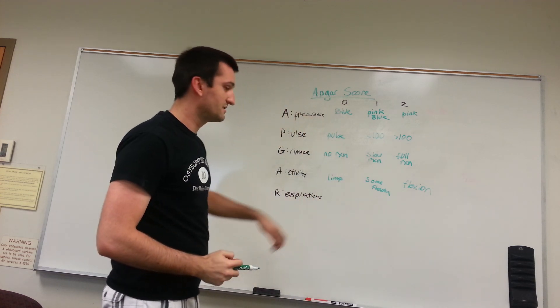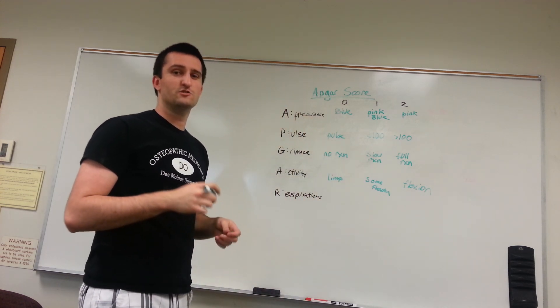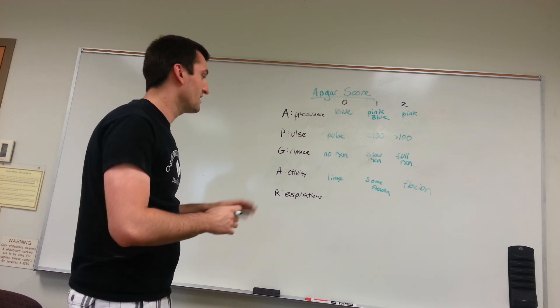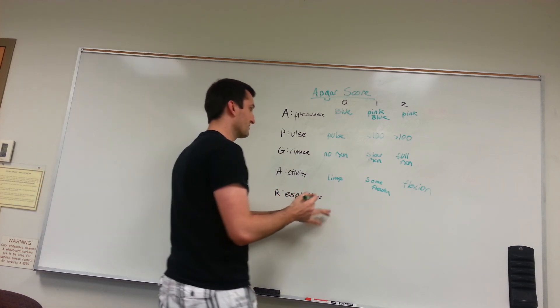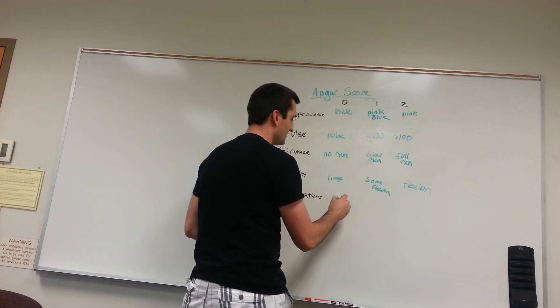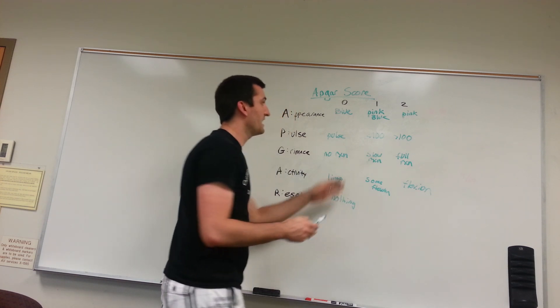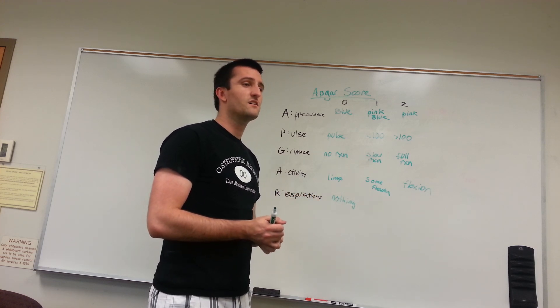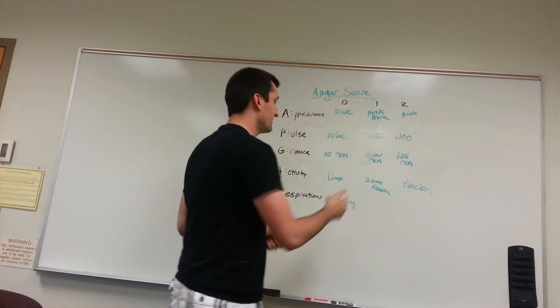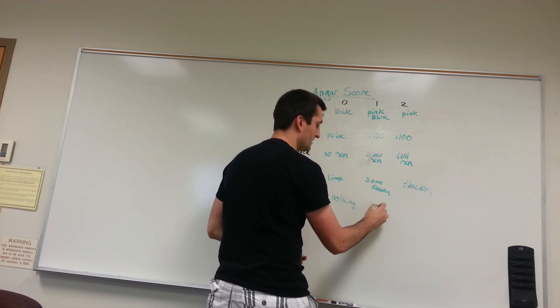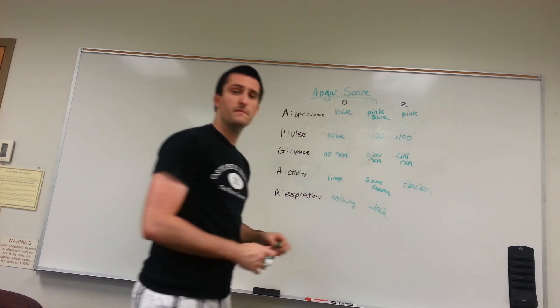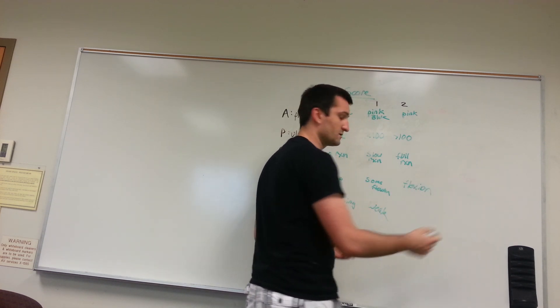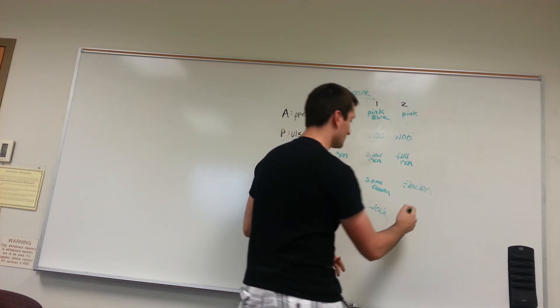Lastly, you've got respirations. If they don't have any strong respirations, if there's no cry, if there's nothing going on, then you're going to give them a 0. If they have a weak cry, if they have very weak respirations, you're going to give them a score of 1. And if they are crying like mad, that's good. That's going to earn them a score of 2 on the voice. Thus, winning the contest of the APGAR score.